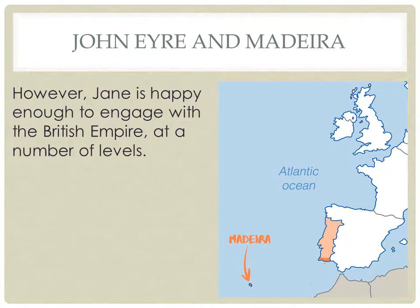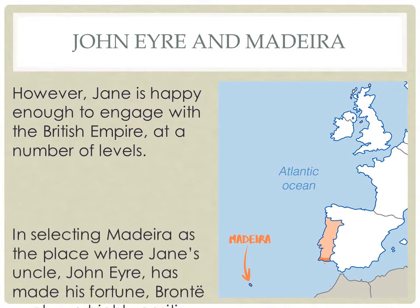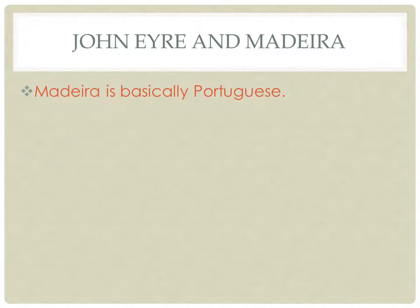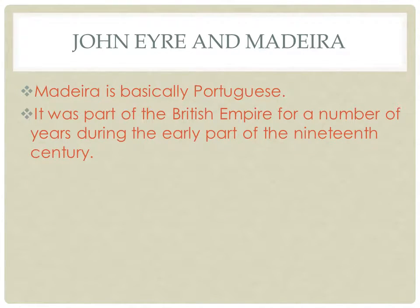In that early stage of the story Jane is the one being colonized — the victim of John Reed's aggression. But as the story goes on, she's happy enough to engage with the British Empire at a number of levels. The first one is Madeira, which has always been basically Portuguese, but during the Napoleonic Wars it was briefly part of the British Empire for a few years.